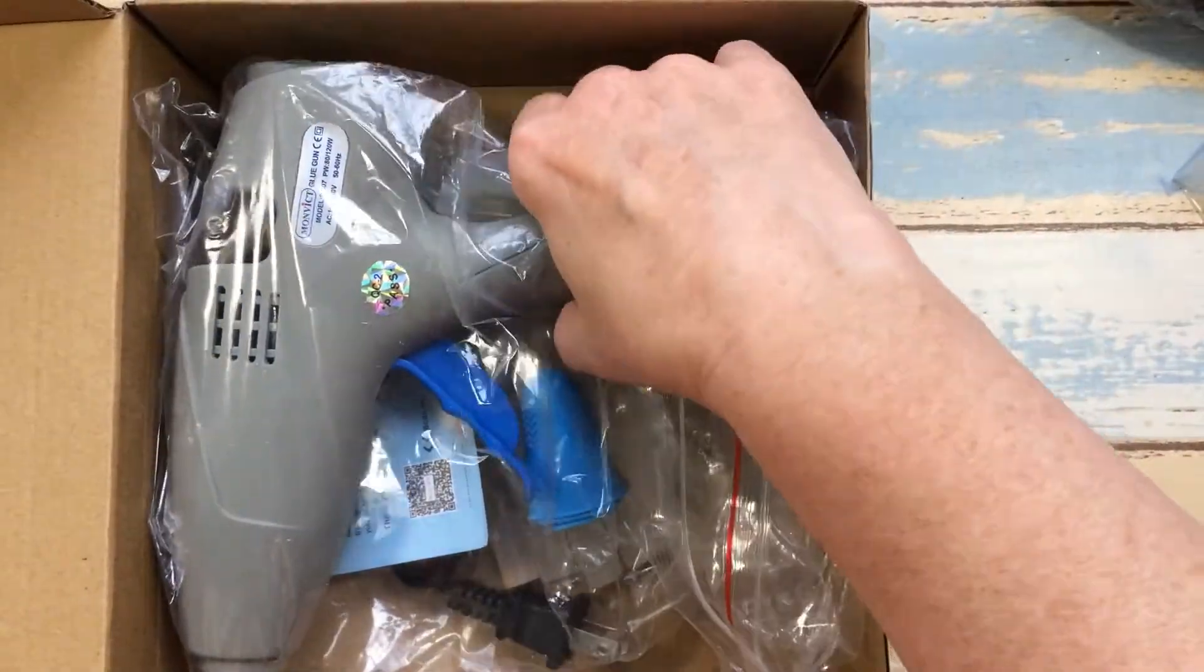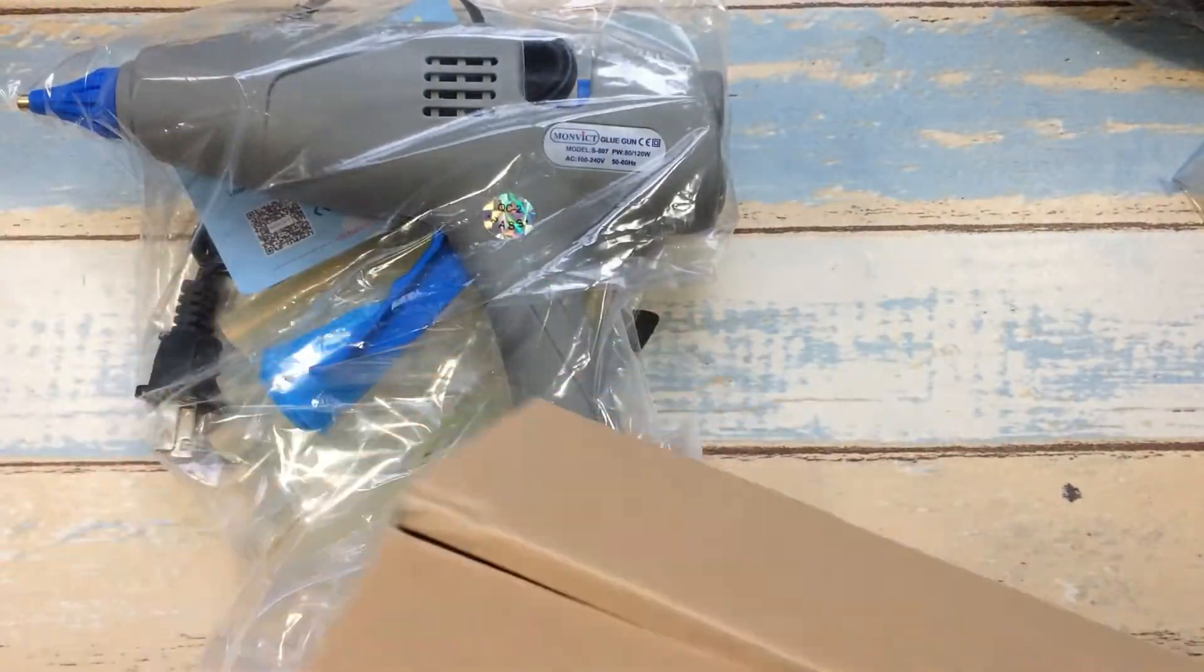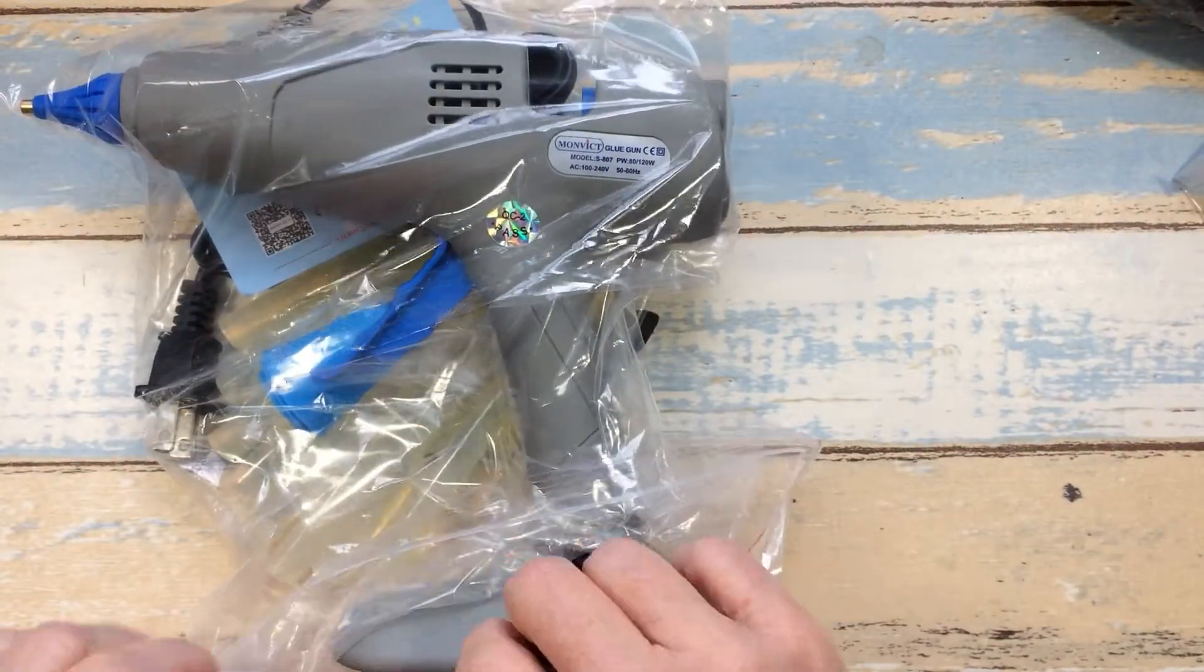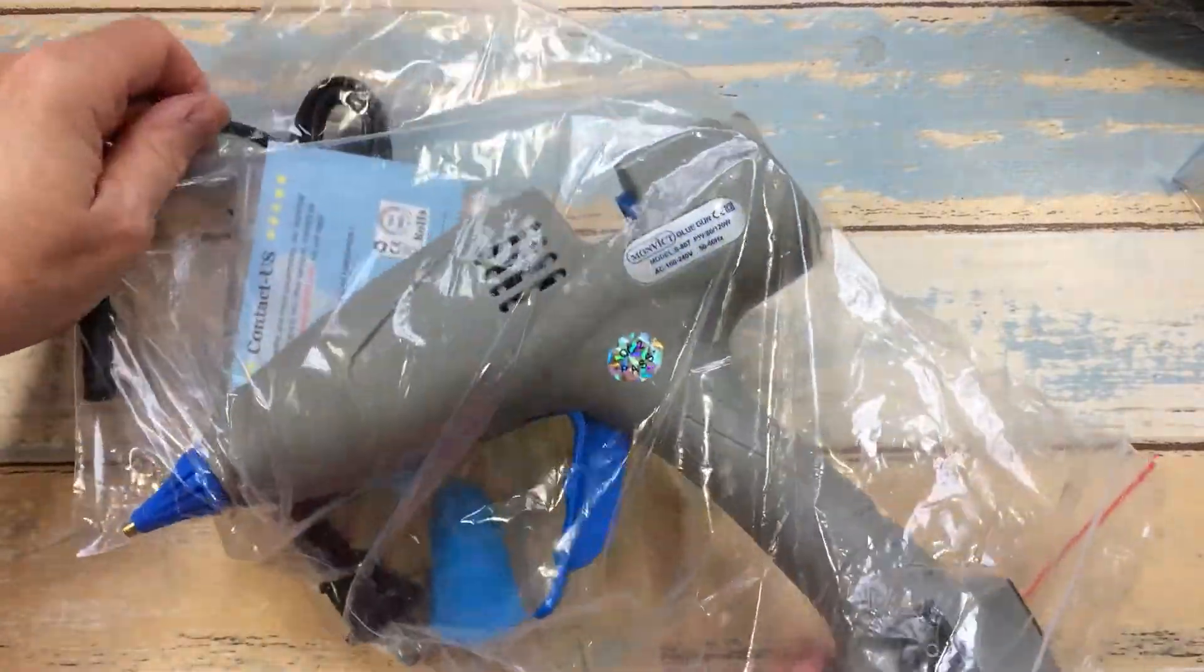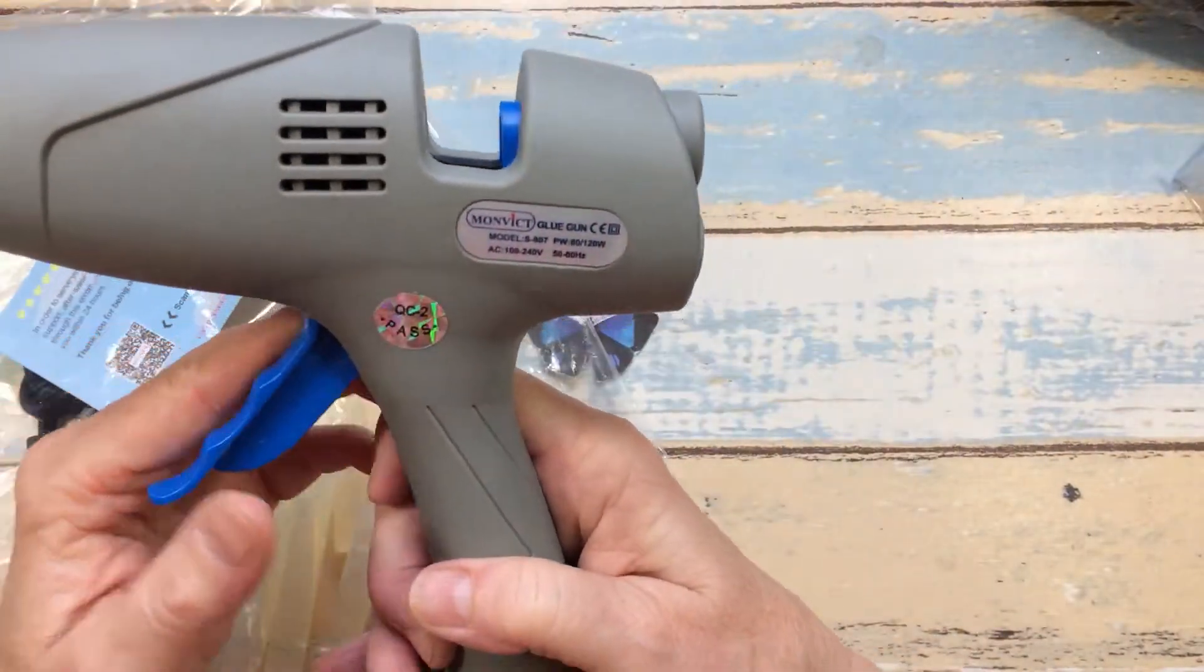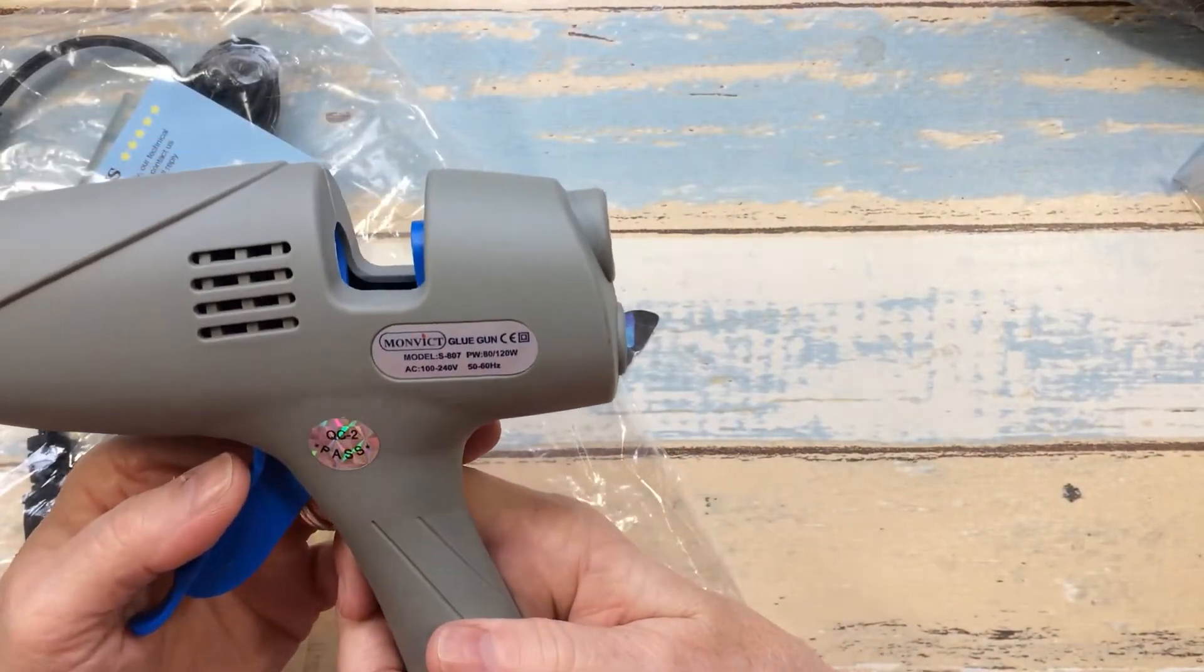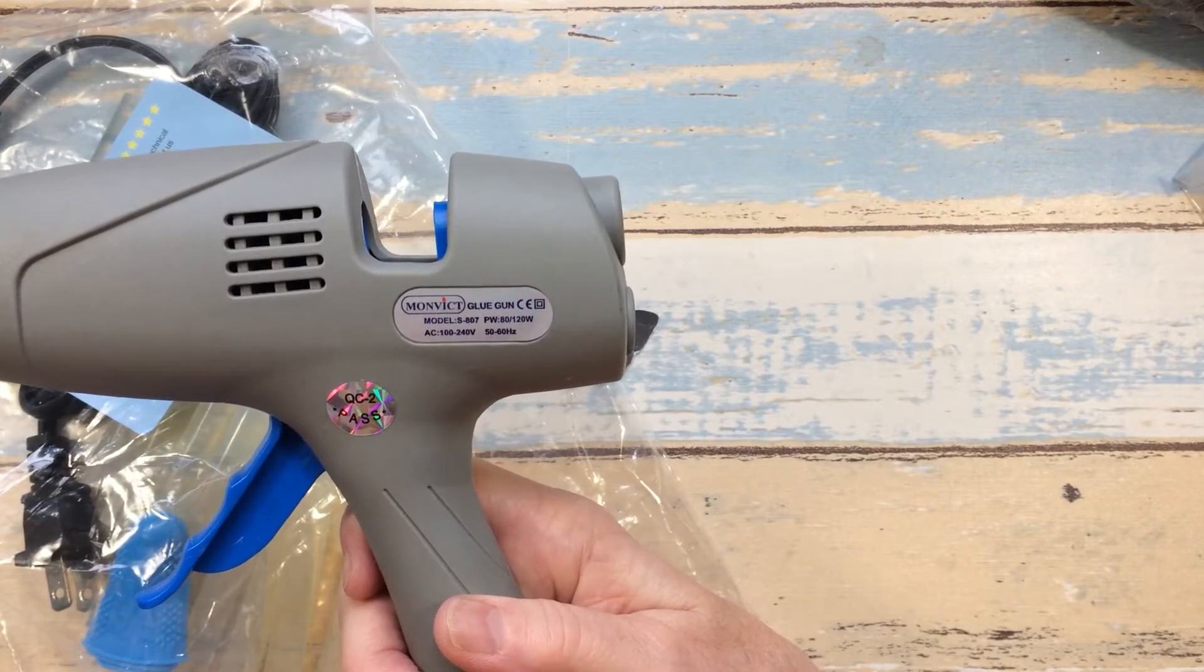This is what they sent me. This is how it comes in that box. Let's take it out of here. It's a nice size gun. It is a Monevict glue gun.